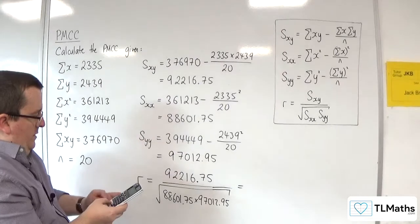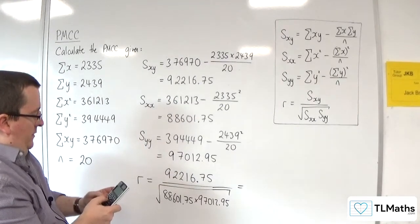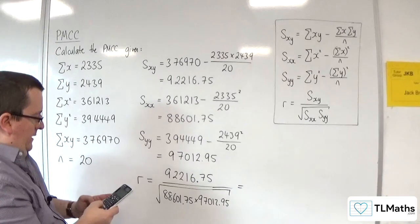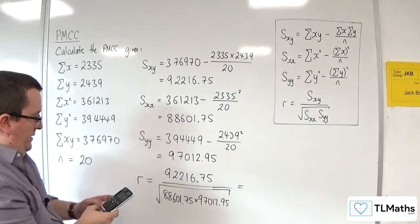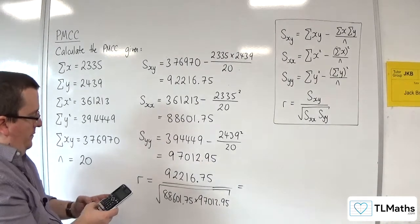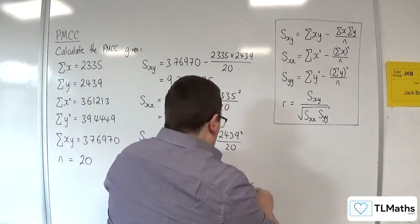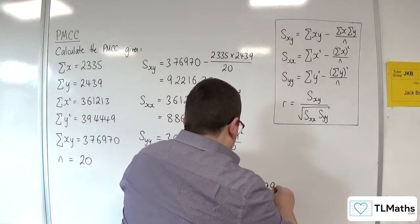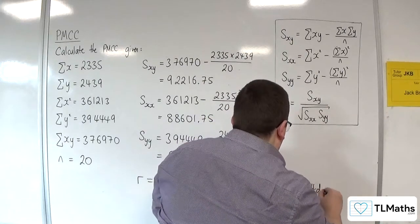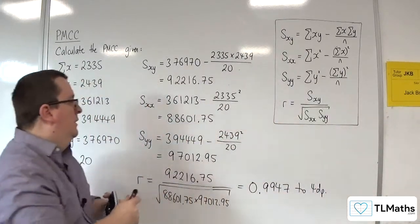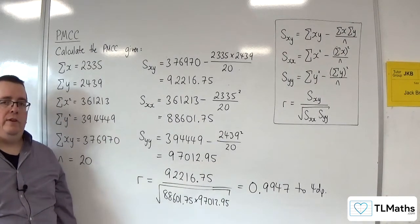Okay, so 92216.75 divided by the square root of 88601.75 times 97012.95. And we get 0.9947 to 4 decimal places. So, in this case, that's showing you very strong positive correlation.